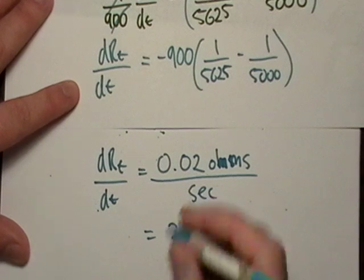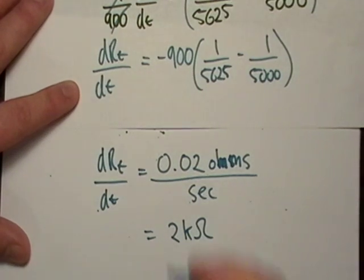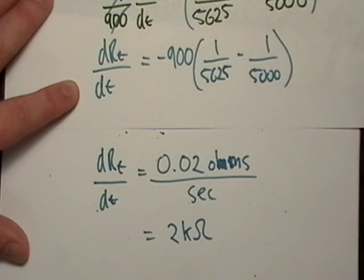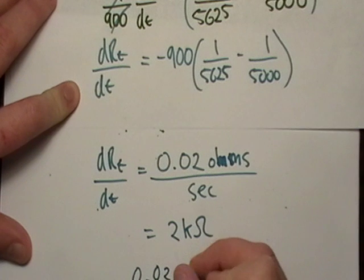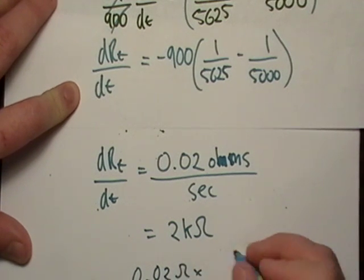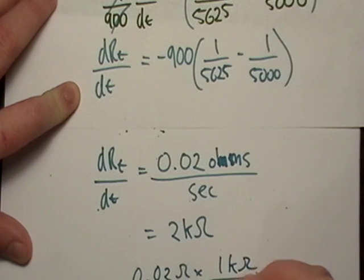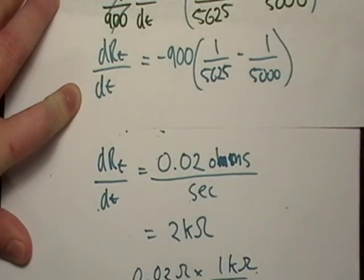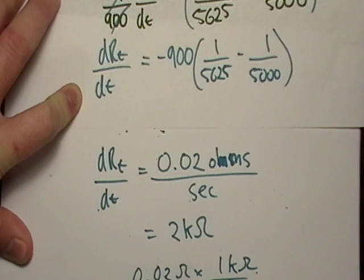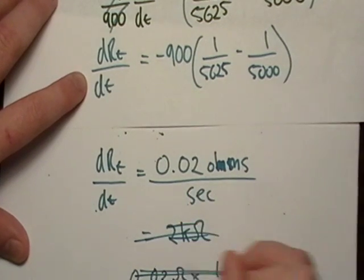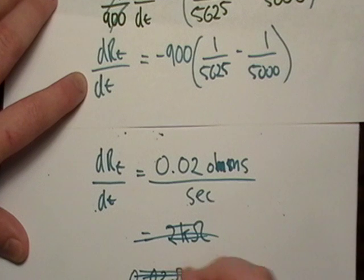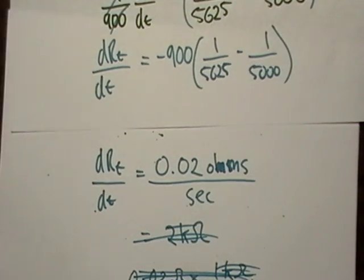Is that right, two kilo-ohms? No, it's not. Let's see here. 0.02 ohms times one kilo-ohm is 1,000 ohms. Actually, I don't know if this is right. My unit conversion. So, no, never mind. Actually, we'll just leave it there. I'm sorry. It's early in the morning. So, let's just leave it at 0.02 ohms per second, which isn't much.